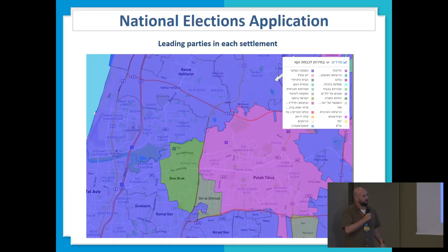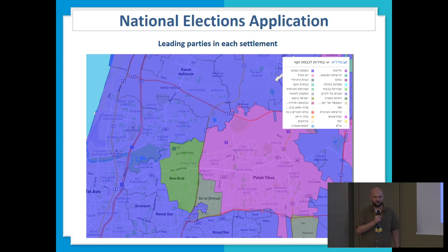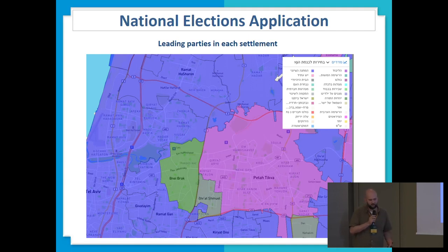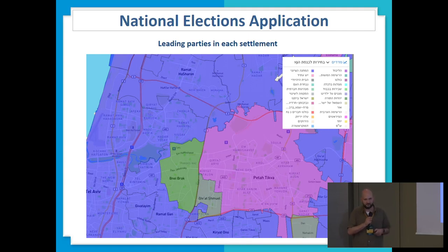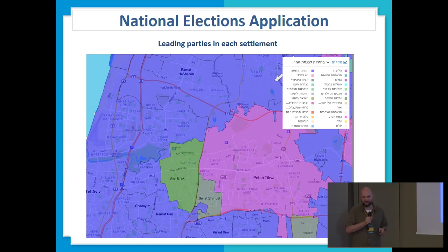One more thing we wanted to put online is the national election application. There will be elections on September 17th — the second round in Israel, because the last ones weren't successful enough. We made this application, which is also Mapbox-based. What's unique about it is that it's completely offline. Everything is pre-calculated: all the cache files, all election result information is stored as JSON files, and all geometries — cities, neighborhoods, and statistical areas — are also pre-calculated, so there are no database or server requests. It simply cannot go down.